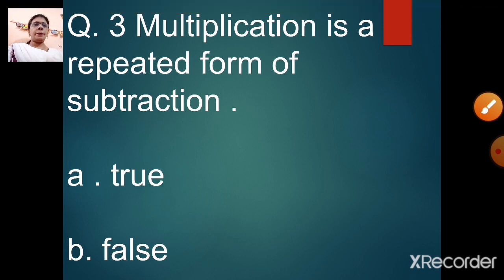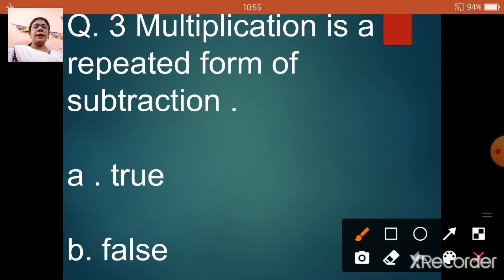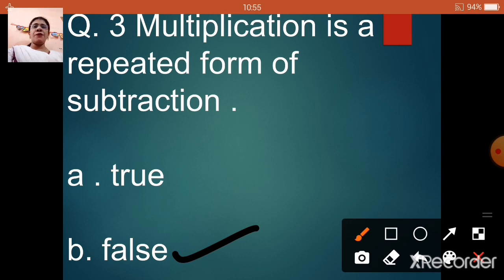Next: multiplication is a repeated form of subtraction. Option A: true. Option B: false. Tell me the correct answer — multiplication is a repeated form of what? Addition. Correct. But here it is given as subtraction, so our answer is option B, false. Multiplication is a repeated form of addition.